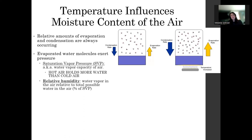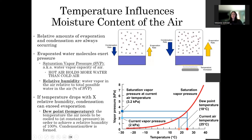Evaporated water molecules ultimately exert a pressure just like any other gas within the air. Hot air is going to hold more water than cold air does, and that's going to be very important for weather patterns throughout the world. Relative humidity — which we see all the time on weather apps — is the water vapor in the air now compared to the total possible water vapor that can be in the air. This graph from your textbook shows us, on the x-axis, increasing temperature and vapor pressure — essentially how much water is in the air and how much pressure that water is exerting. This red curve is the saturation vapor pressure, and the first take-home message is that warmer air can hold more water before reaching that dew point temperature at which condensation is going to happen.